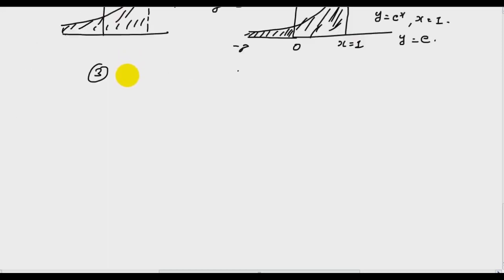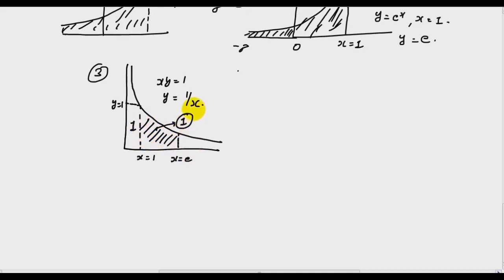Now coming to the third point. Let us take a rectangular hyperbola xy equal to 1, or I can say y is equal to 1 by x. So if I take x and y equal to 1, then this area is 1. And if I take x equal to e, then this area is also equal to 1. And this unique property makes e the natural base of logarithm.